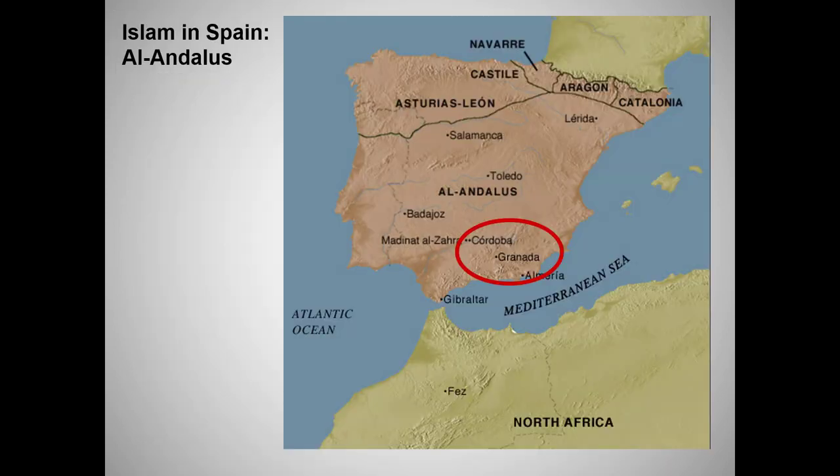Now on to Al-Andalus, or Muslim Spain. If I were offered a trip in a time machine and told that I had to go back to the year 1000, but I could go anywhere in that year, I'm pretty sure I'd dial up Cordoba. It was a city of vast learning, exquisite architecture and art, and a cosmopolitan, tolerant environment where Muslims, Jews, and Christians lived in relative harmony and with considerable intellectual and cultural exchange.